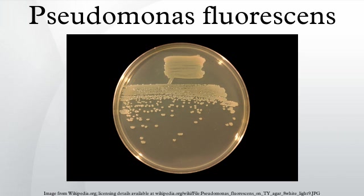Metabolism: Pseudomonas fluorescens produces phloroglucinol, phloroglucinol carboxylic acid, and diacetylphloroglucinol. Regarding biodegradation capacities, 4-hydroxyacetophenone monooxygenase is an enzyme found in P. fluorescens that transforms 4-hydroxyacetophenone, NADPH, H+, and O2 into 4-hydroxyphenyl acetate, NADP+, and H2O.